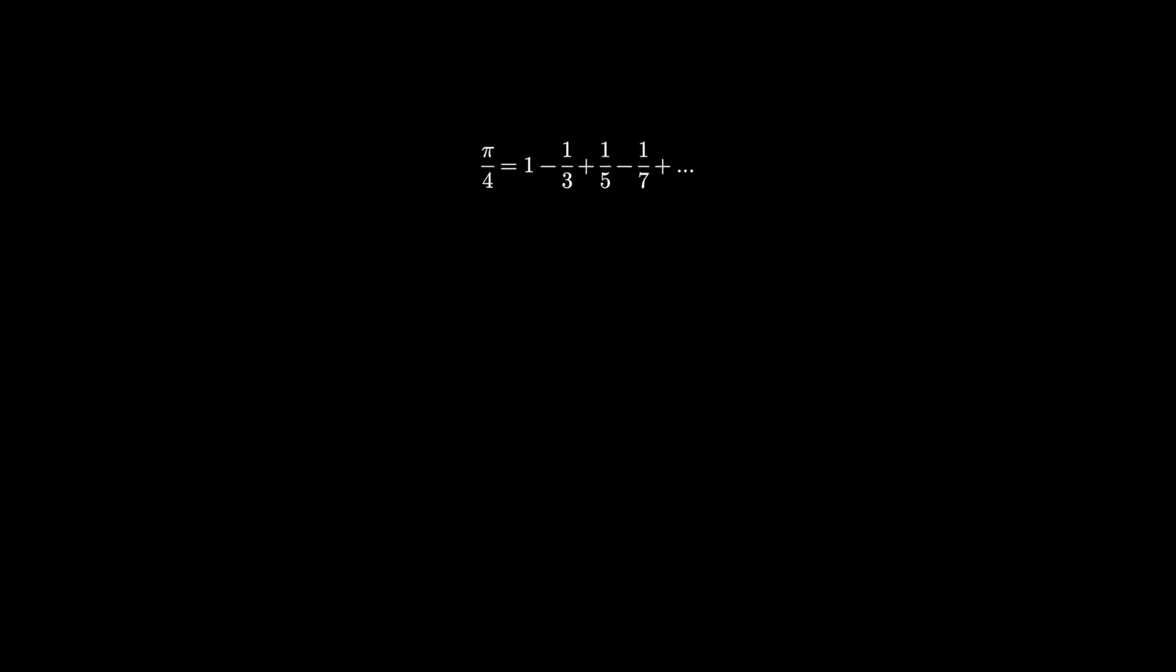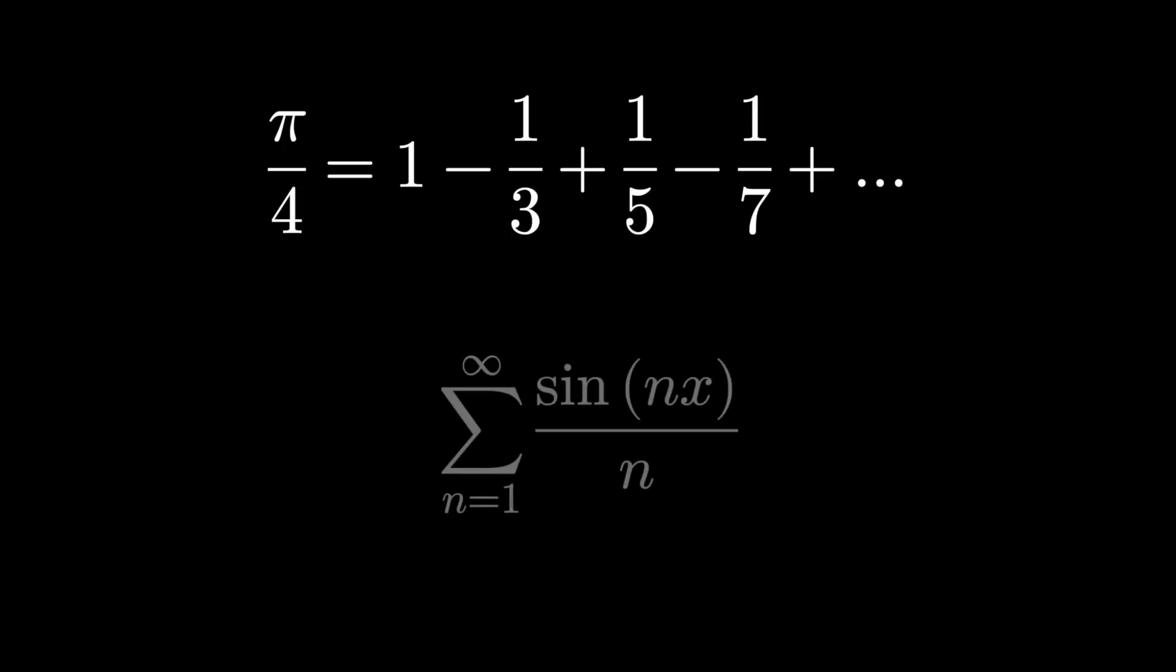Here's a very interesting formula for pi, but how do we get here? Let's take a look at the series the sum from n equals 1 to infinity of sine of nx over n.